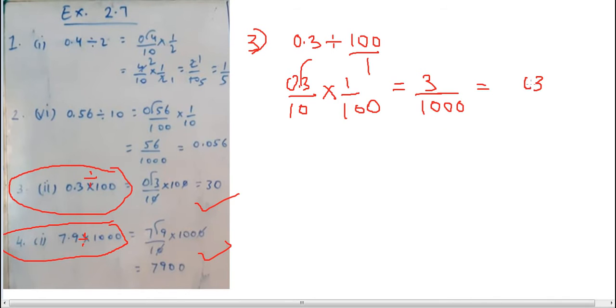So 3/1000, after three places decimal. All right, number 4: 7.9 divided by 1000. 7.9, remove decimal, it will become 79/10, divided by 1000, into 1 by 1000.